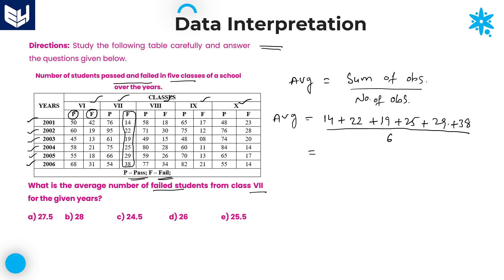Now add all the values. 8 plus 2 is 10; 10 plus 9 is 19; 19 plus 9 is 28; 28 plus 9 is 37. 3 is the carry, 7 is there. 3 plus 1 is 4, 6, 7, 9. 9 plus 2 is 11; 11 plus 3 is 14. So 147 divided by 6.